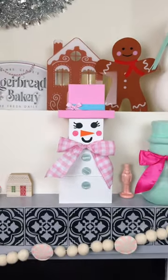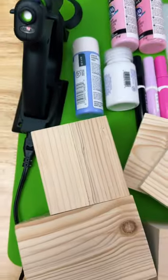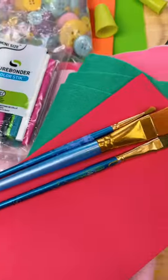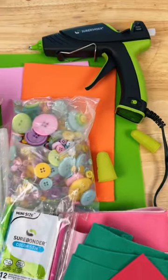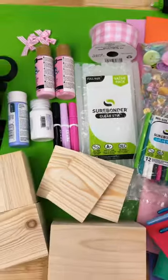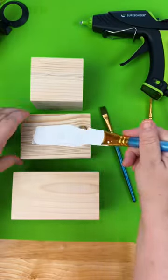Let's make this adorable woodblock snowman. How cute is it? I made this with my amazing Shurbonder glue sticks and glue guns. Thanks to Shurbonder for partnering with me to create this amazing DIY. We're using the clear sticks and the color sticks. You can find the full supply list over on the blog.